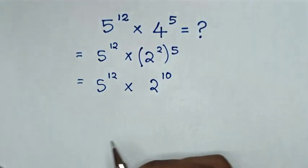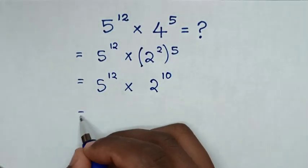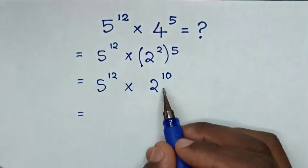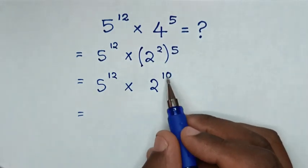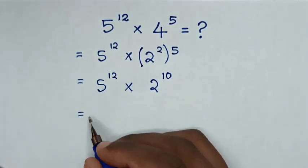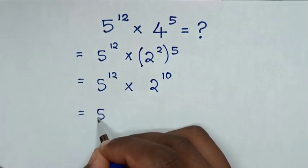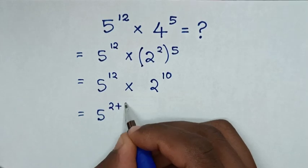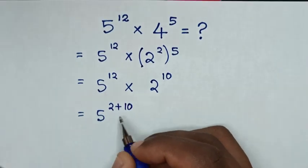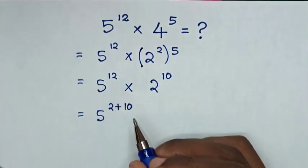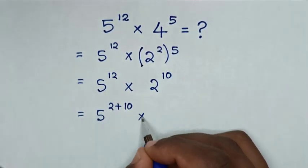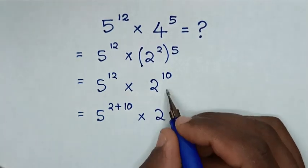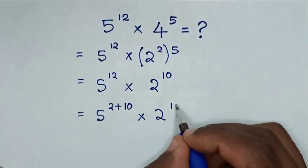Then, for this exponent with power of 12 to have a common power of 10, this is the same as 5 power of 2 plus 10, because 2 plus 10 is 12. Then times 2 power of 10.